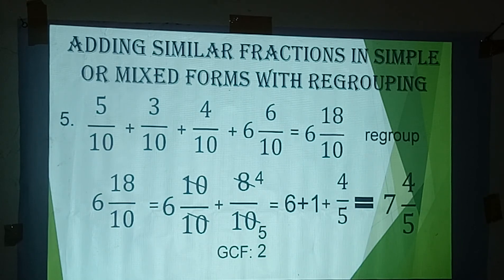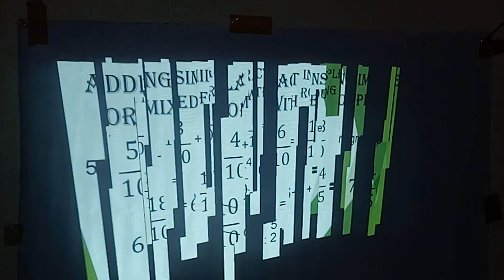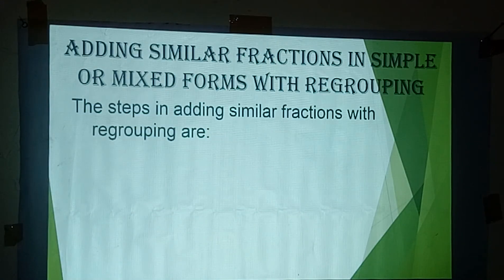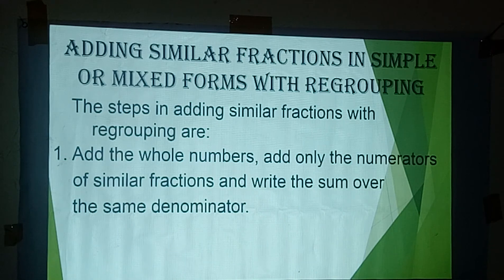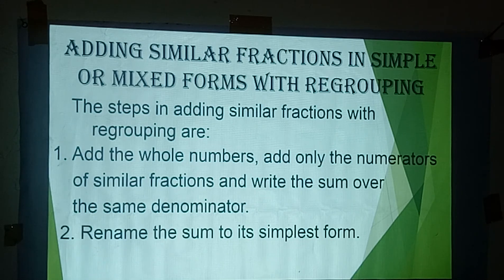Let me tell you the rules for adding similar fractions in simple or mixed form with regrouping. Step 1: add the whole numbers and add only the numerators of similar fractions, writing the sum over the same denominator. If the result is not in simplest form, simplify or rename the sum to lowest terms.